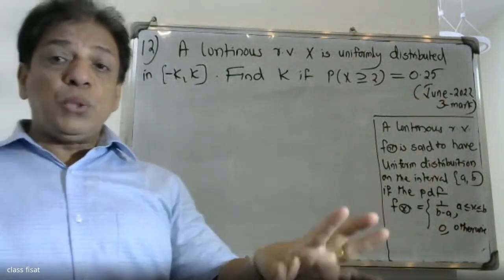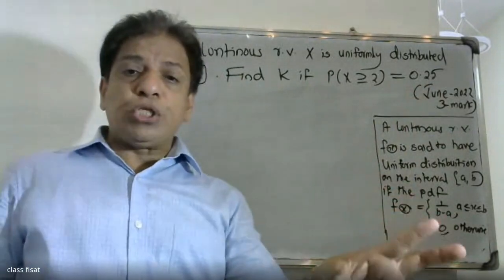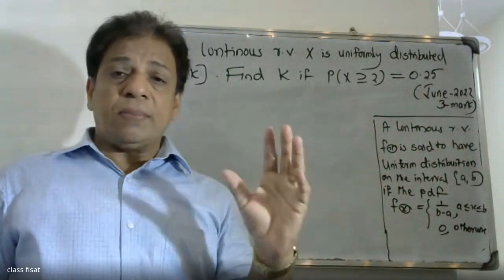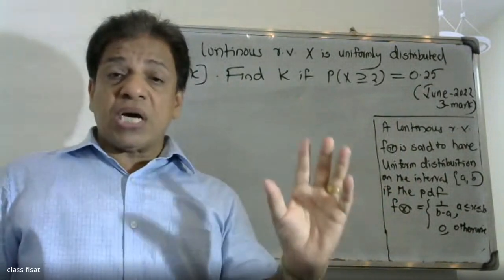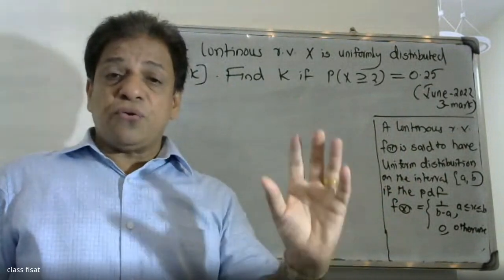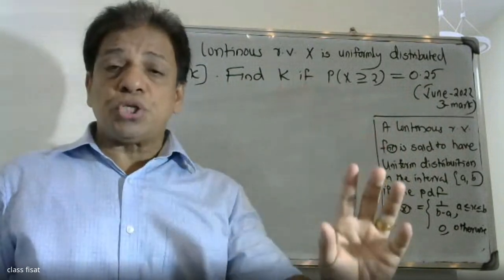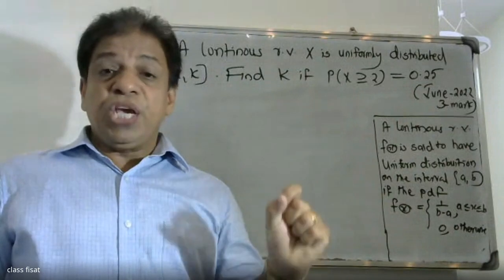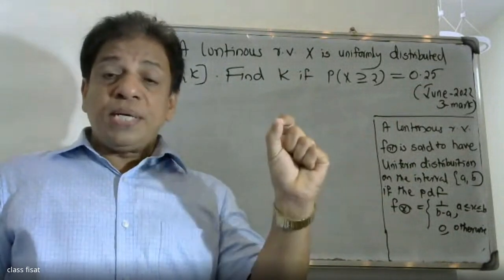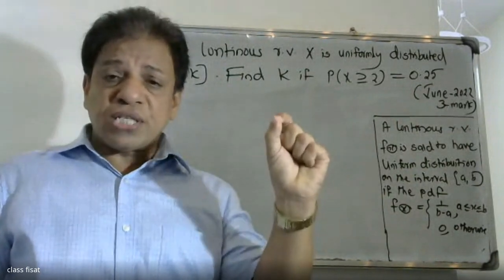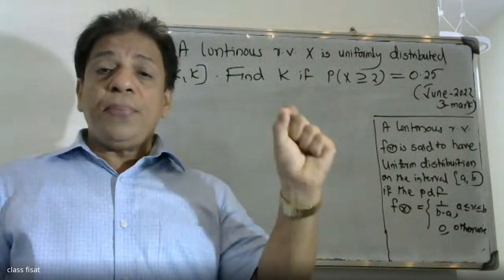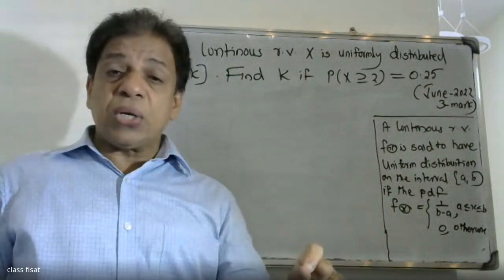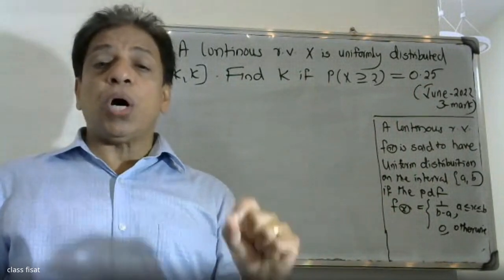The problem involves uniform distribution. A continuous random variable f of x is said to follow a uniform distribution on the interval a, b if the probability density function f of x is equal to 1 by b minus a, for a less than or equal to x less than or equal to b, and 0 otherwise.